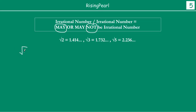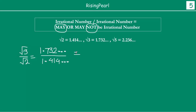Let's divide √3 by √2. Square root 3 is 1.732... and square root 2 is 1.414... If you divide them, you get something like 1.224... Because of this non-terminating, non-repeating decimal portion, this result is an irrational number.